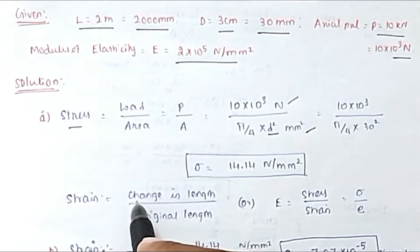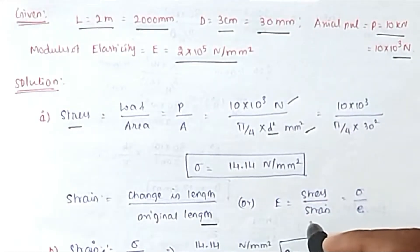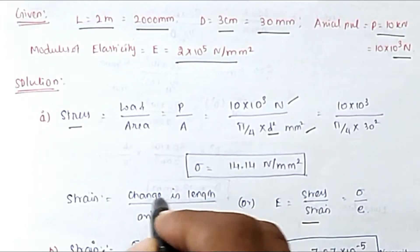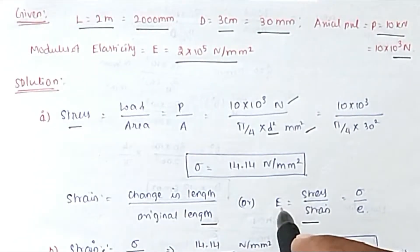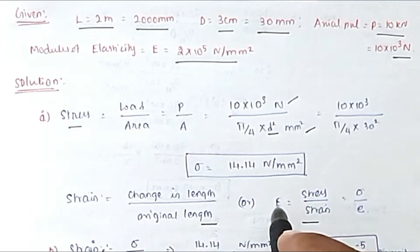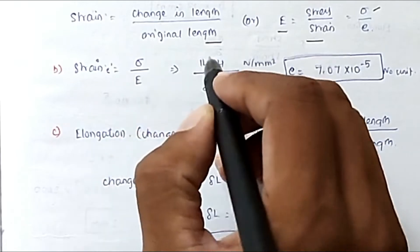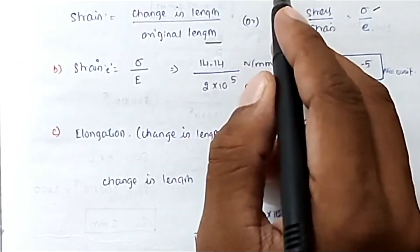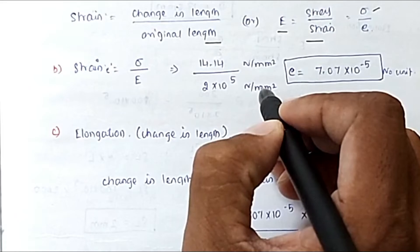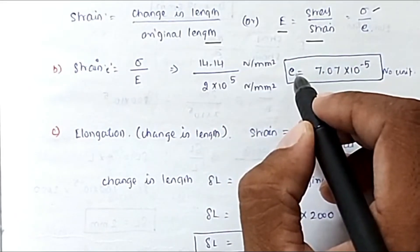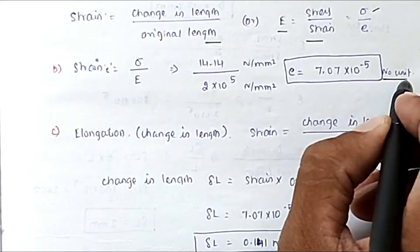Next, we find strain. Strain = change in length / original length. We also know E = stress / strain. Since the change in length is not given, we use strain = σ / E. Substituting σ = 14.14 N/mm² and E = 2×10⁵ N/mm², the units cancel and we get strain = 7.07×10⁻⁵. Strain has no unit.